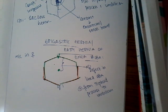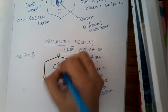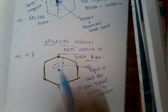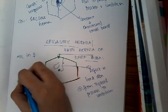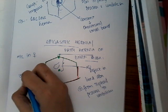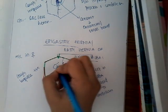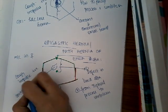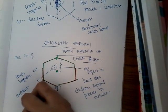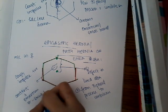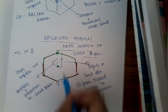The defect is mainly in the linea alba. Clinically, you see a swelling in the midline with a cough impulse — cough impulse will be positive. Mostly it has no sac, so it is a sacless hernia, and the content of this epigastric hernia will most commonly be omentum.